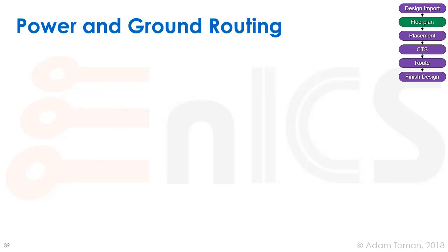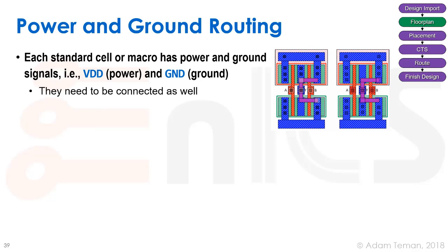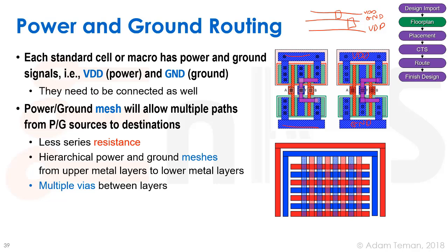To route power and ground, every standard cell has VDD and ground signals. We provide alternating VDD-GND-VDD rails so cells can just be placed inside and receive both supplies. However, the long resistance along those wires remains. To minimize resistance from the power pad to every gate, we use what's called a power mesh — a hierarchical grid of interconnected power wires.